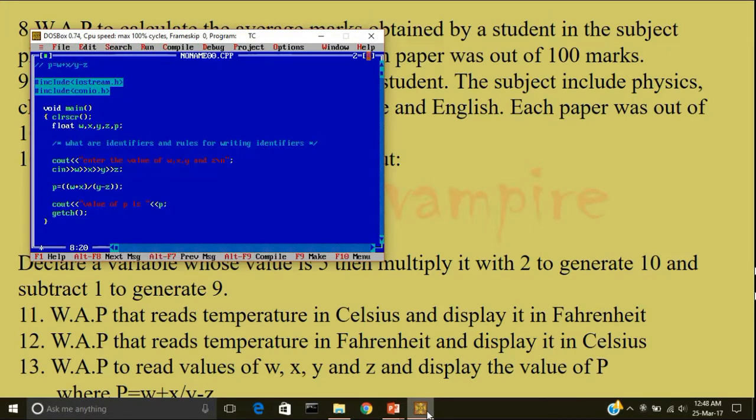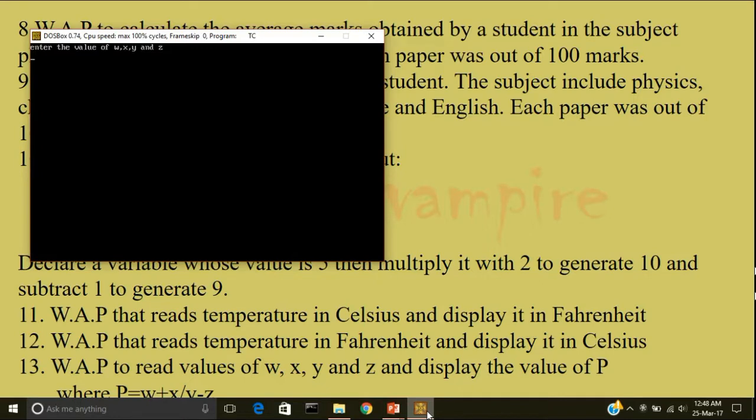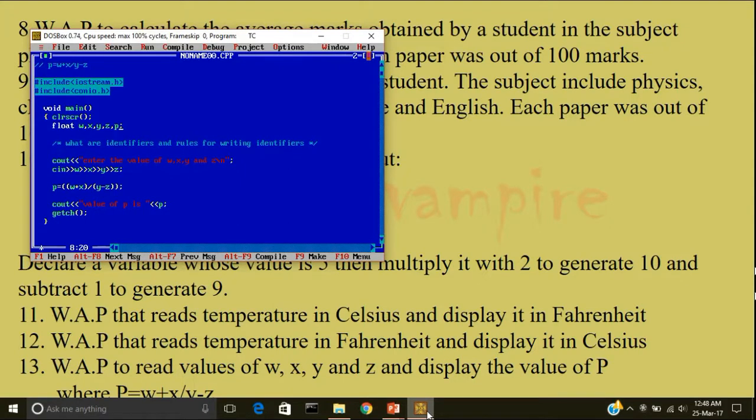I'll compile the program and run it. Enter the value of w, 34, x, 12, y, 45, z, 68. The value of p is minus 2. I'm wrapping up this video. As always, I'll see you guys in the next tutorial.